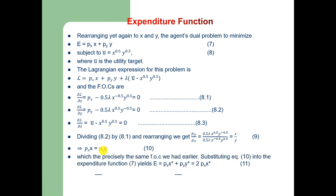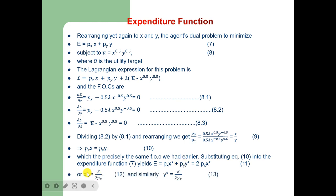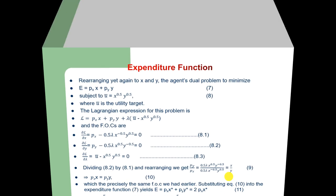Substituting this first order condition into the expenditure function (equation 7) yields e = p_x*x* + p_y*y* = 2*p_x*x*, where x* is the optimal value of good x. So x* = e/(2p_x) and similarly y* = e/(2p_y). These are exactly the same optimal values found earlier.